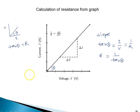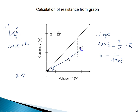Now, if I increase the resistance, what will happen to the slope? The slope will decrease. If there are two resistances R1 and R2, and R2 is more than R1, the steeper line corresponds to lower resistance.